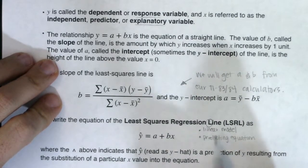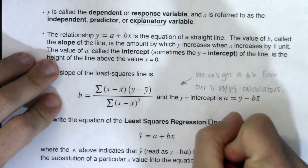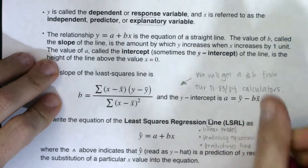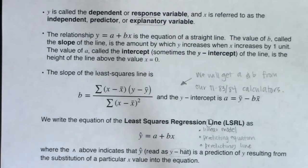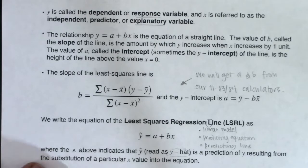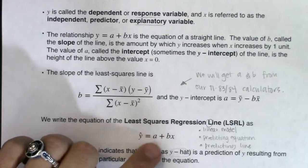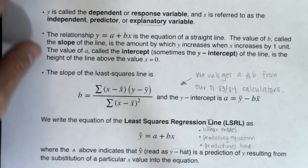We could call it the linear model, a predicting equation, a predicting line, or just y-hat. All of those mean the same thing. We're going to look at the calculator function to figure out how it gives us a and b — the y-intercept and the slope — without having to do all of those manual calculations.